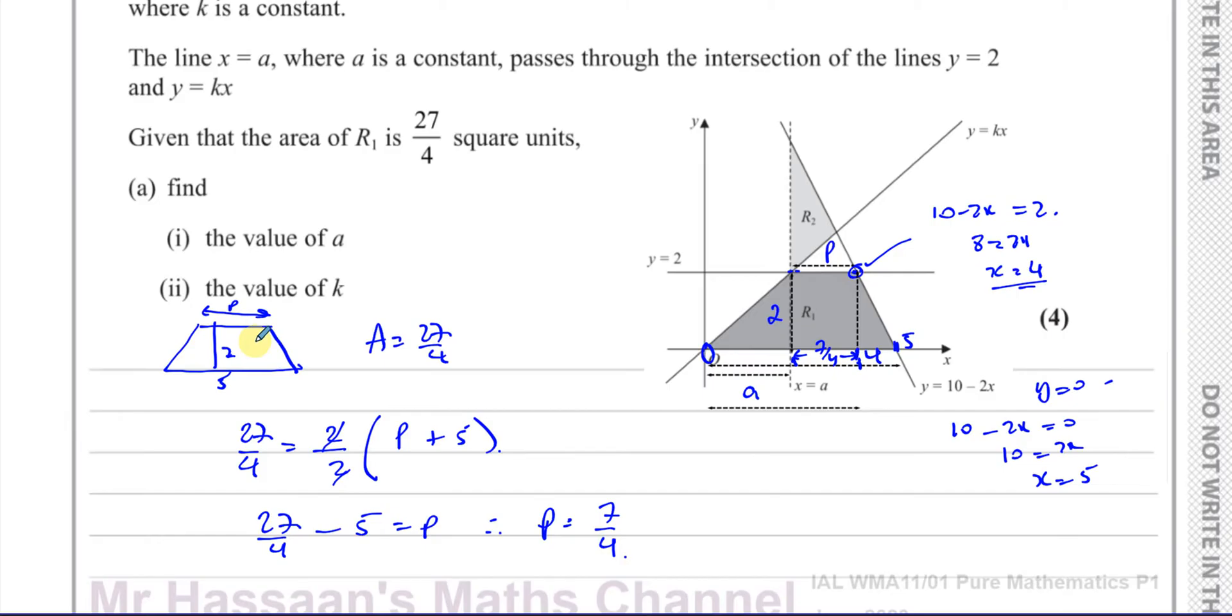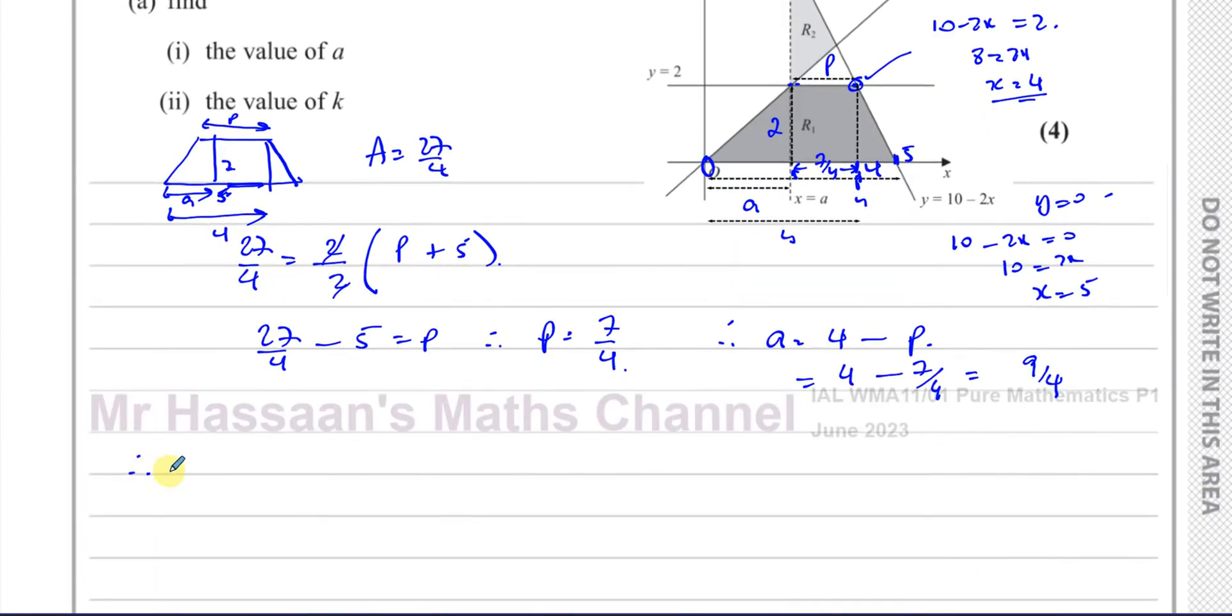So I can see that up to this point, x equals 4. So that's going to be 4. So we can say that from here to here is 4, and from here to here is A. So we can say this is going to be 4 minus P. So therefore, our A is equal to 4 minus P, which is 4 minus 7 over 4, which is 16 over 4 minus 7 over 4, which is 9 over 4. So we found the value of A. Therefore, A equals 9 over 4.